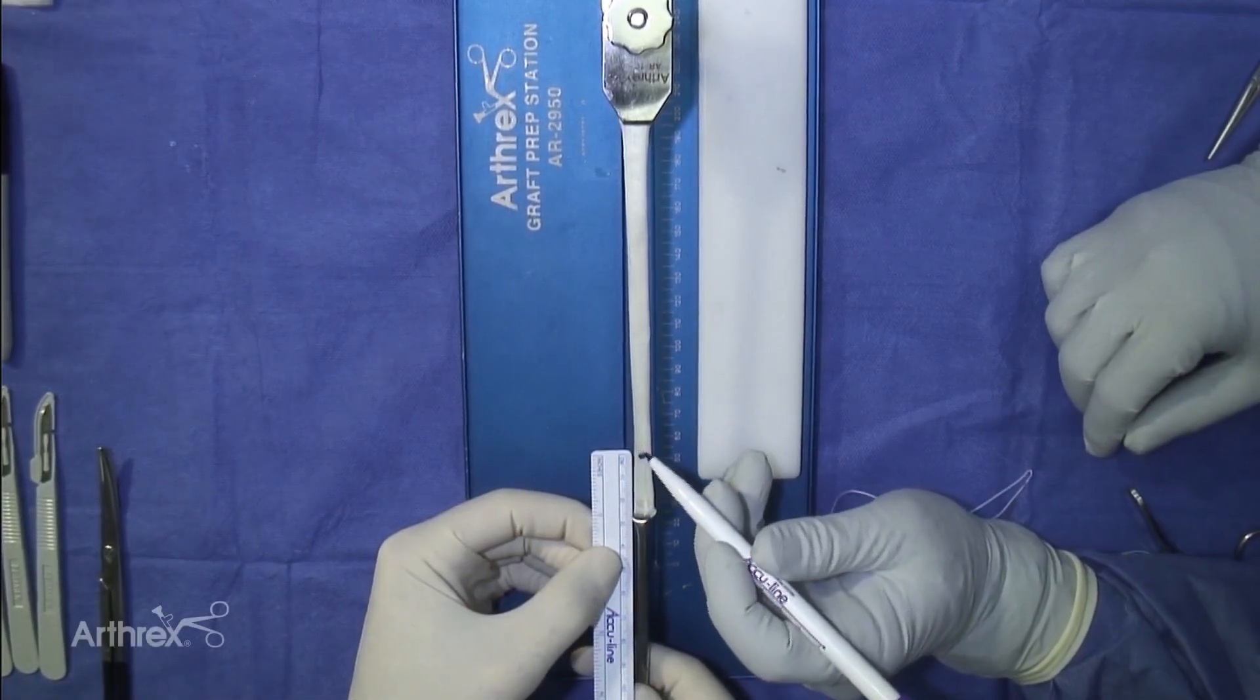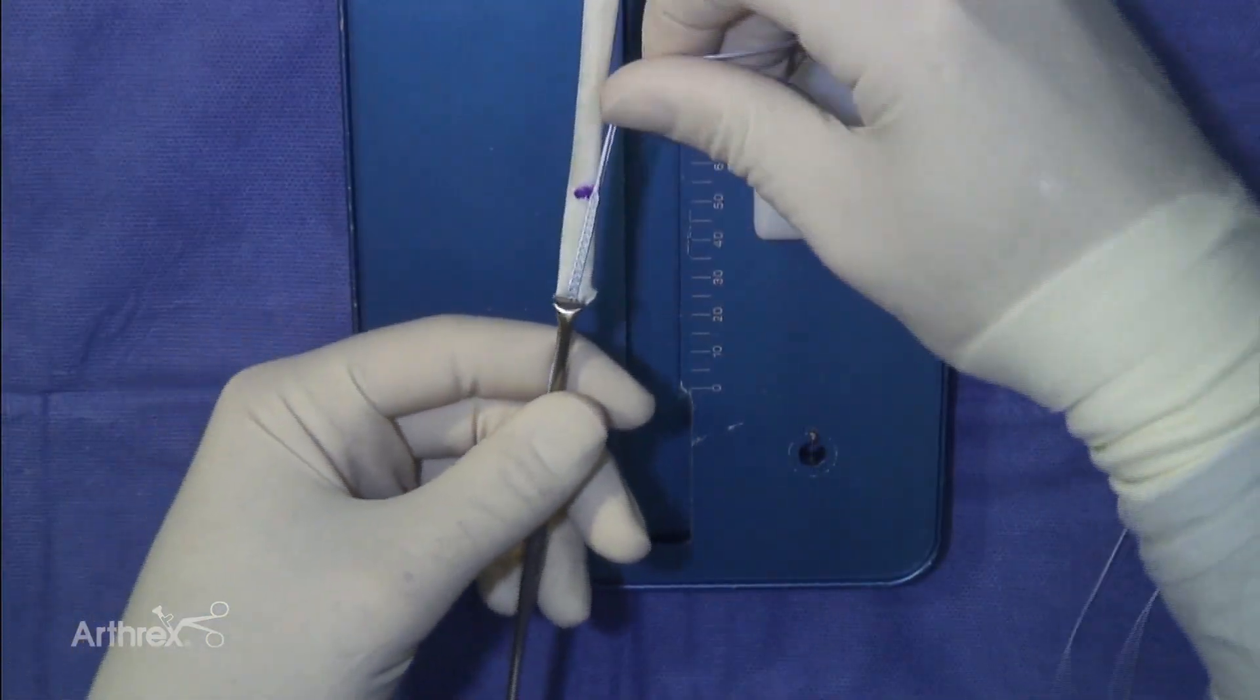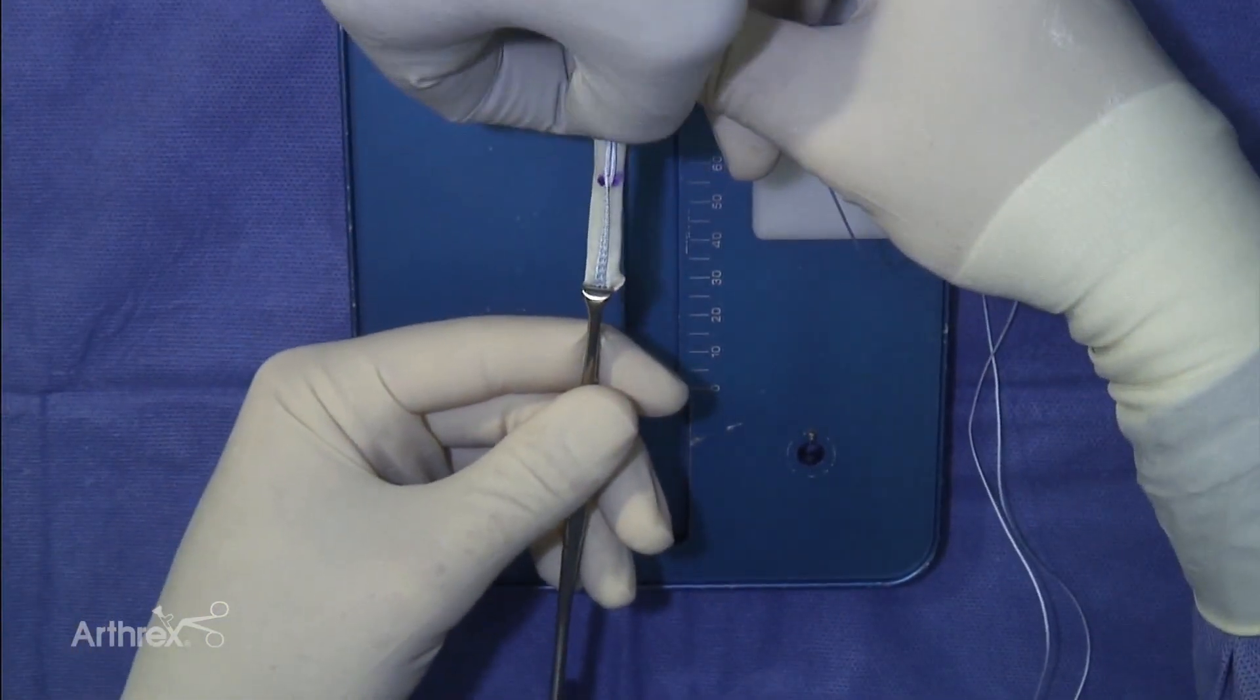Mark the graft at the desired length of the whip stitched portion. An Alice clamp may be used to hold the fiber tag together with the graft at the very end of the graft.